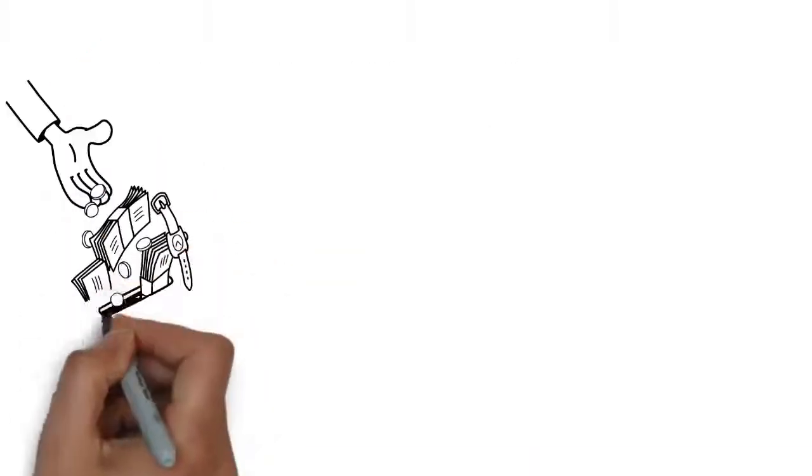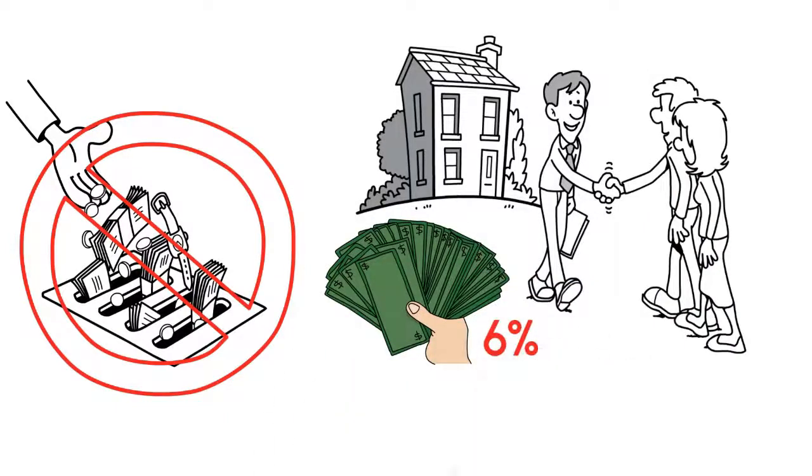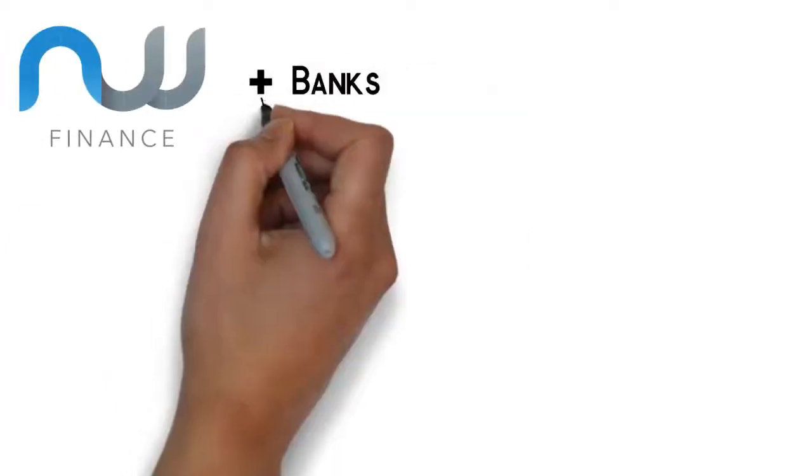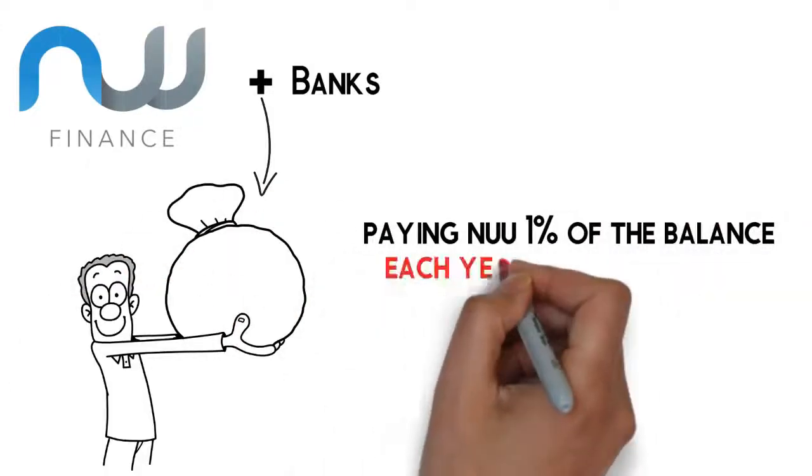The contractors not only market the loans to homeowners but also pay New 6% of the loan. New partners with banks and they are the ones that actually make the loans, paying New 1% of the balance each year in commissions.